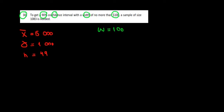If the width is $100, that means the margin of error must be half of it because the margin of error is half the width. So that would be 100 divided by 2, which equals 50.